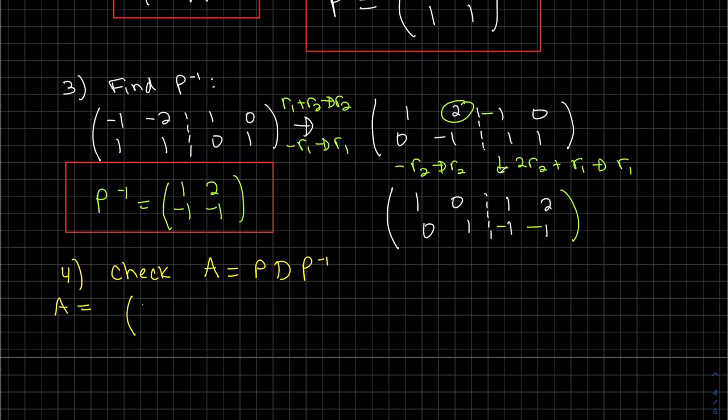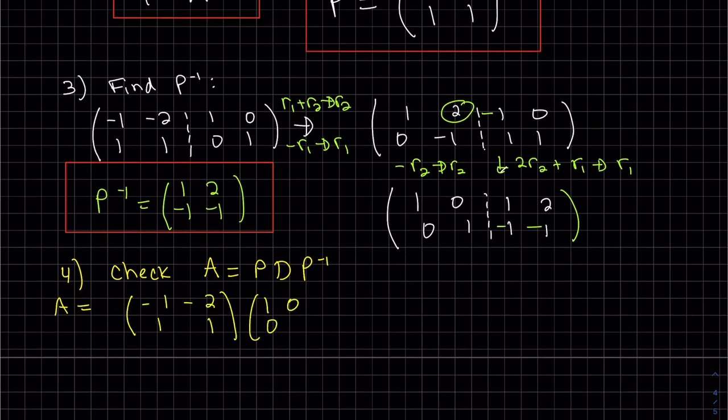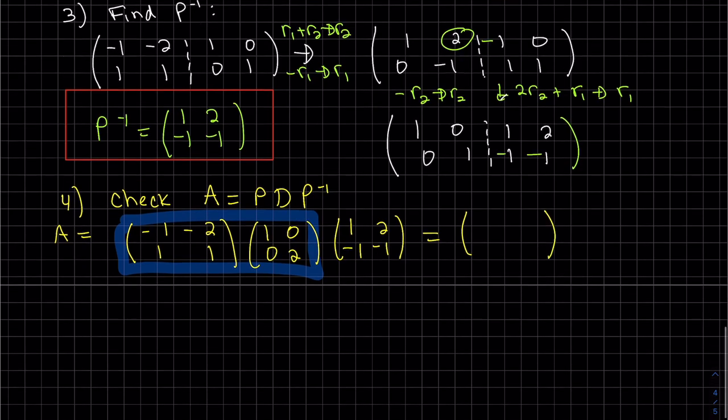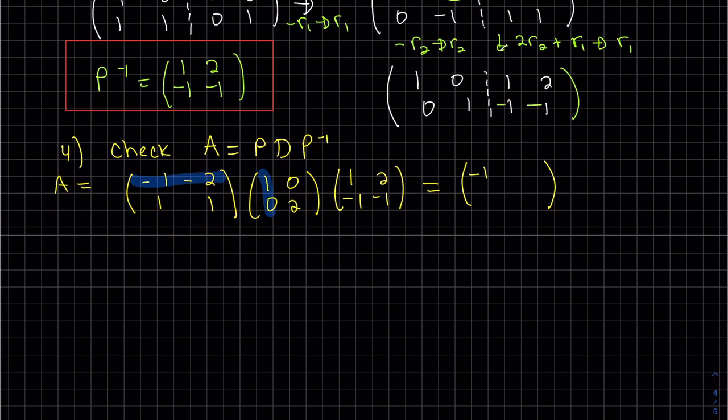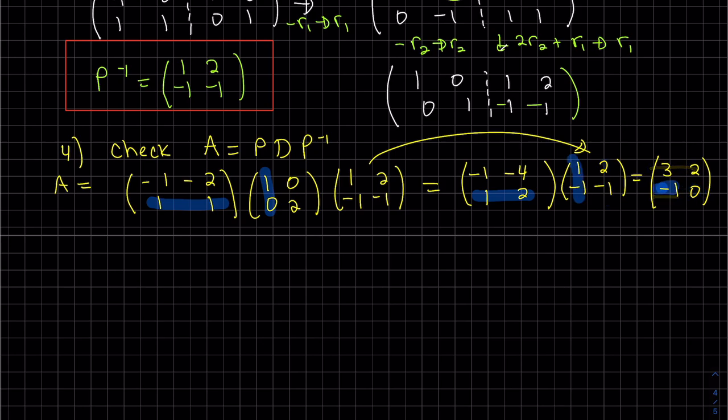So to make sure we have the correct matrices and that this actually works, we're going to check. So P D P inverse we just found, and multiply these two we get a two by two, of course that goes there multiply these two, and yeah make sure you check it and just don't write A, but yeah this is A and so we have checked it.